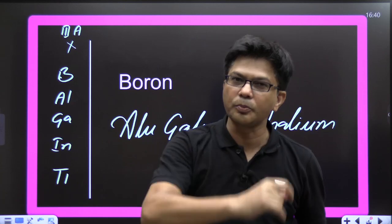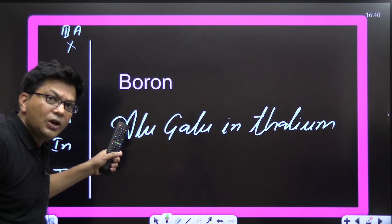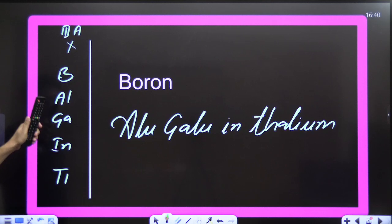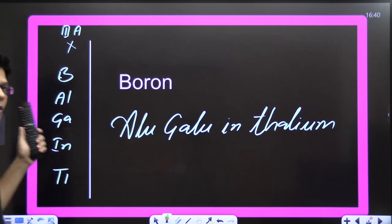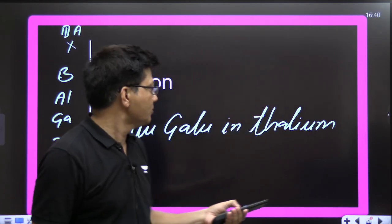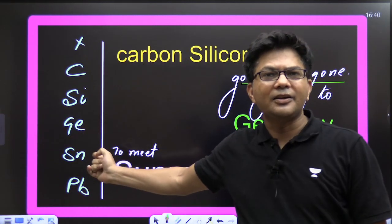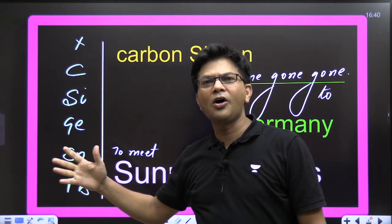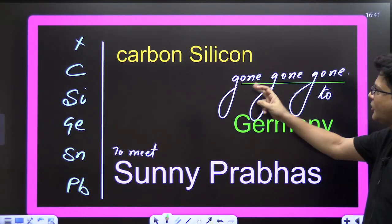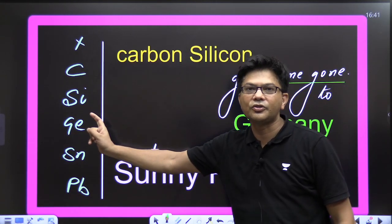Now coming to the P block. Group 13: Boron, Aluminium, Gallium, Indium, Thallium. Boron is a non-metal and very small because it belongs to the second period. Mnemonic: Alu Galu In Thallium — Alu Galu In Thallium.